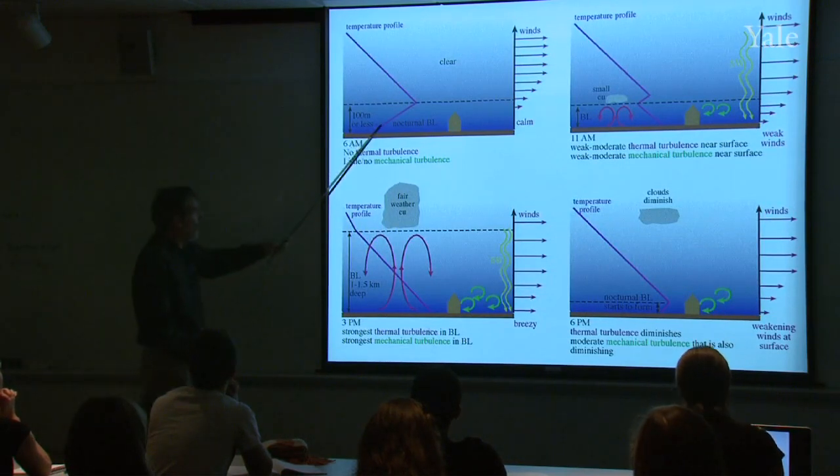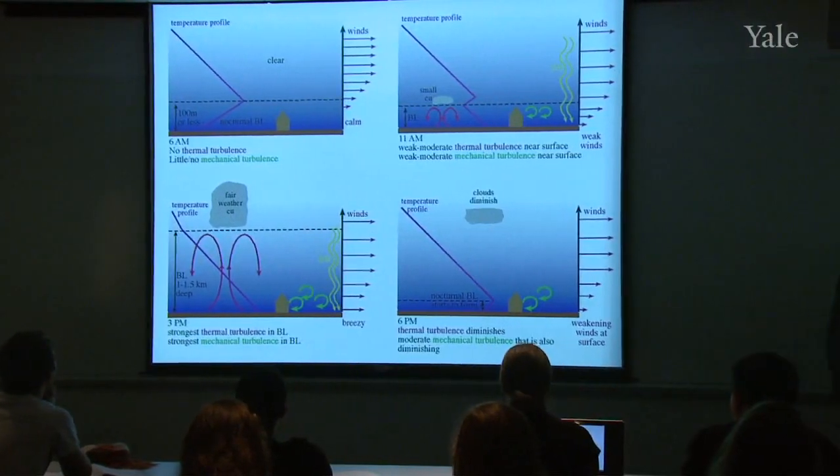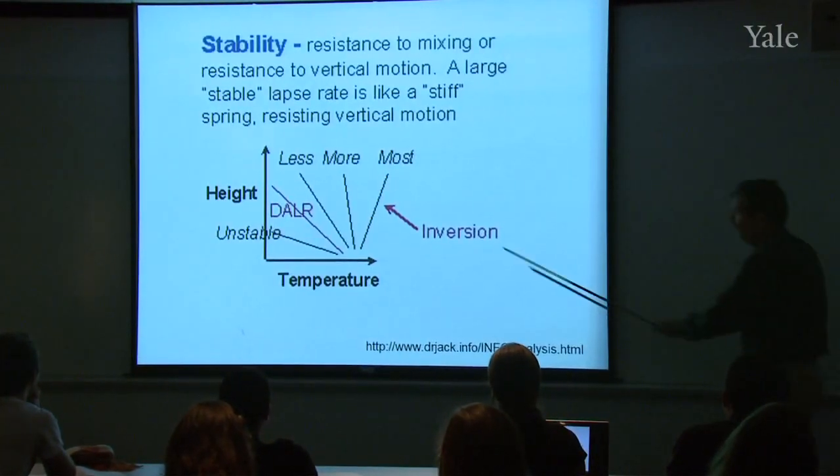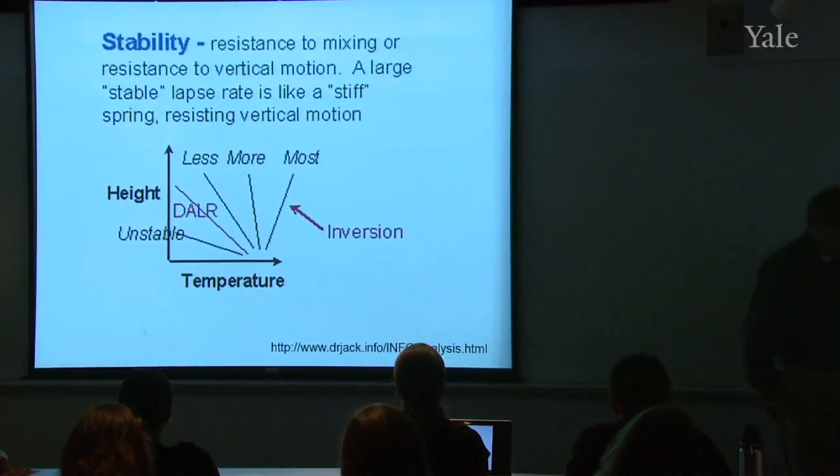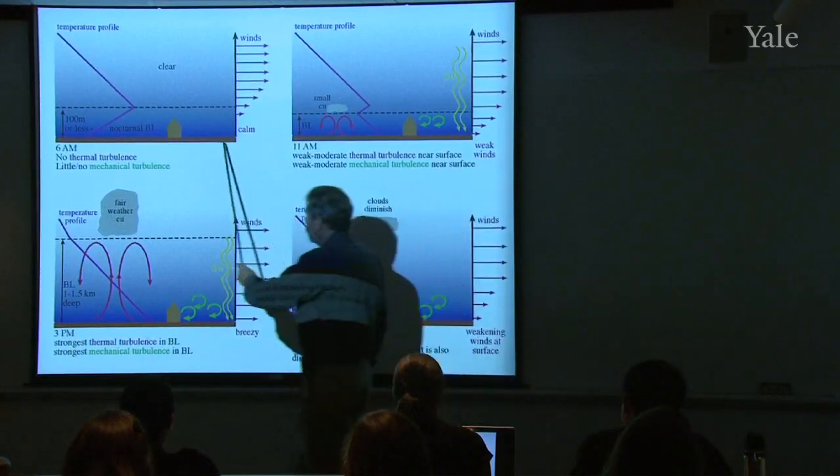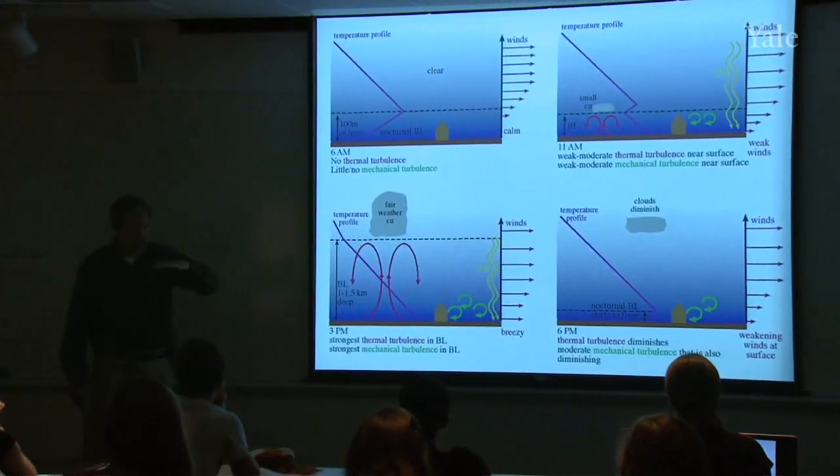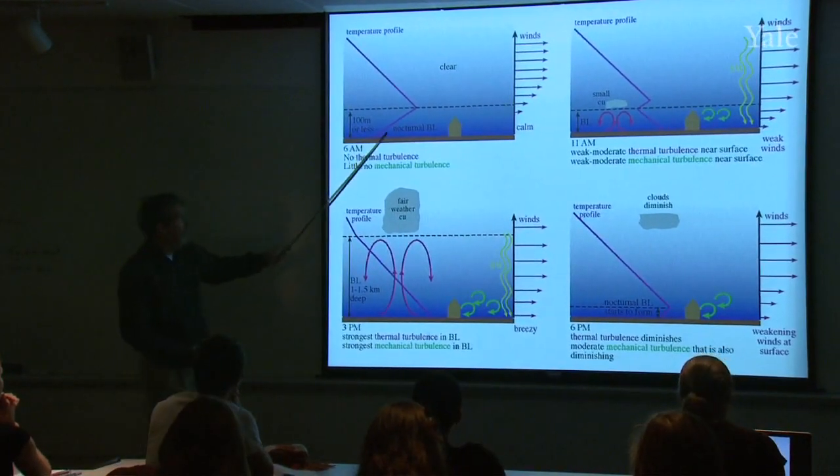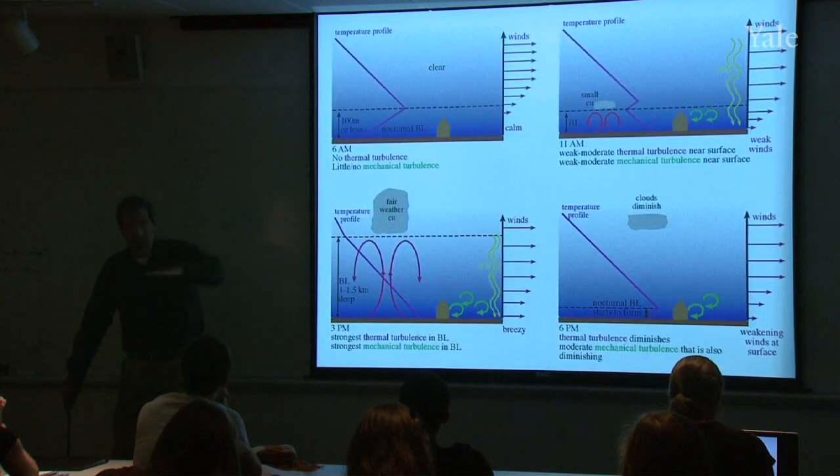That's this, right? So that's a very stable atmosphere. And turbulence will be suppressed. There will be very little turbulence, very little vertical motion. And the air will just lie there quietly in layers.